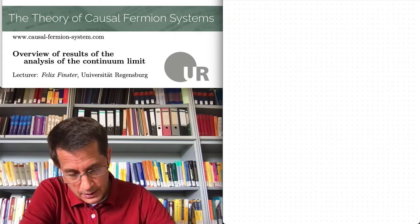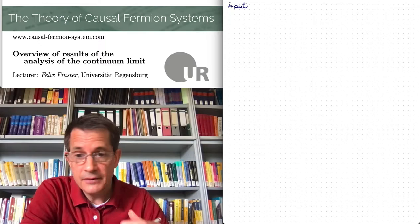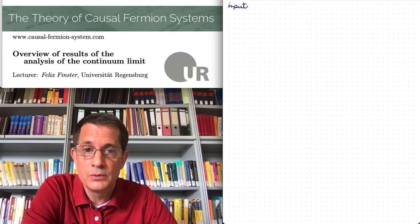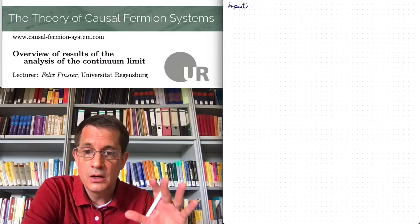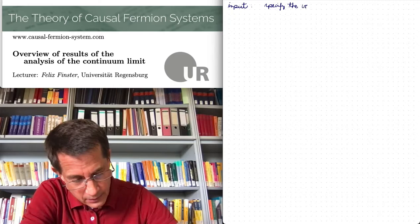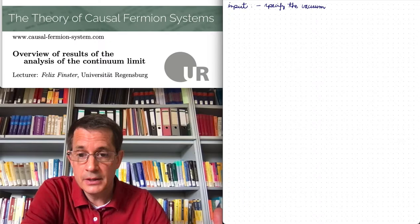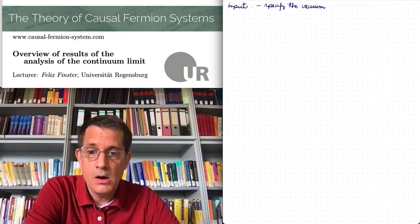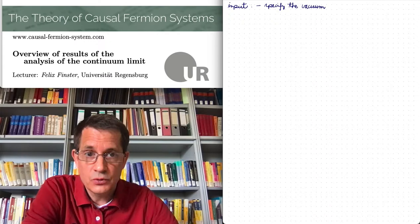What is the input? Of course, we have to do some model building. We have to specify which physical system we want to consider, and to this end we have to write down the causal fermion system describing the vacuum. This means we have to specify the vacuum, which involves a few free parameters like the masses of the corresponding Dirac seas. We also have to regularize, and there is a lot of freedom to regularize.